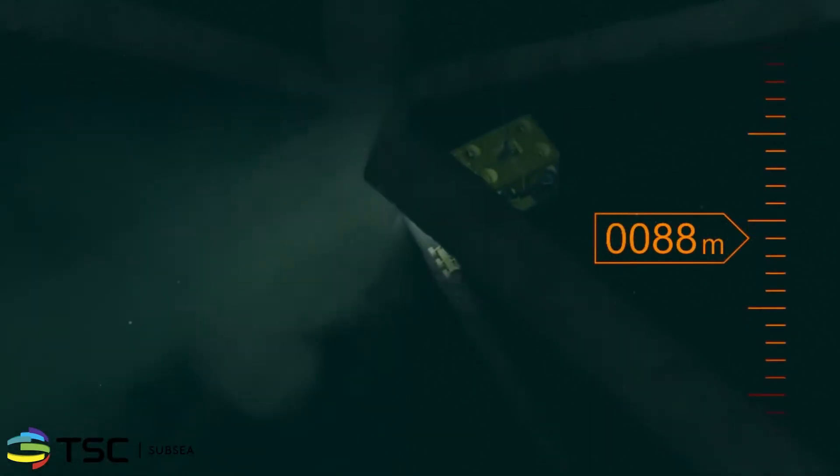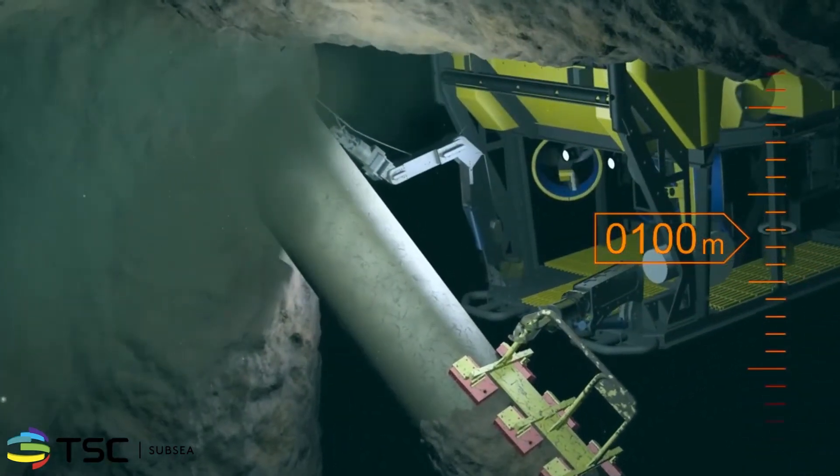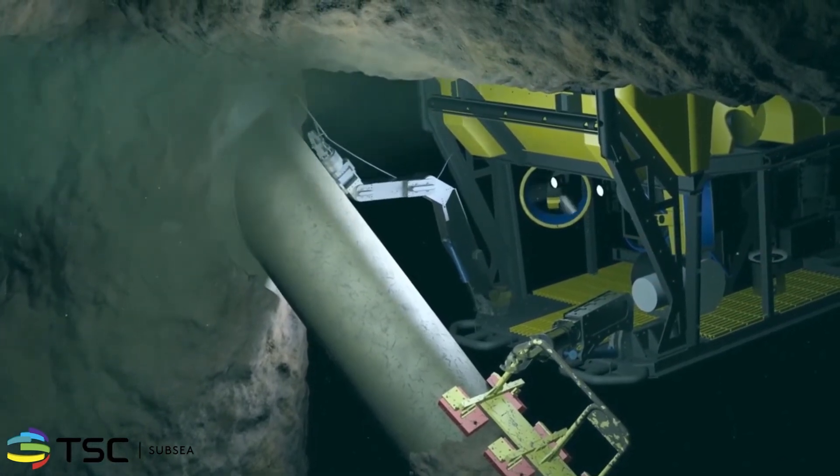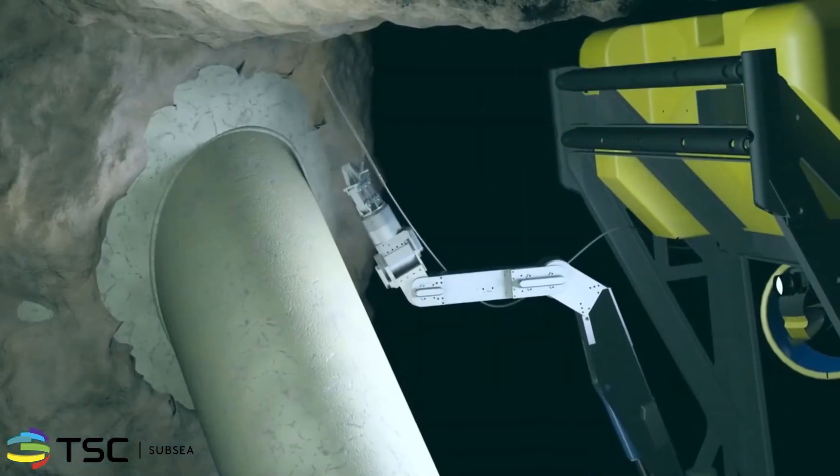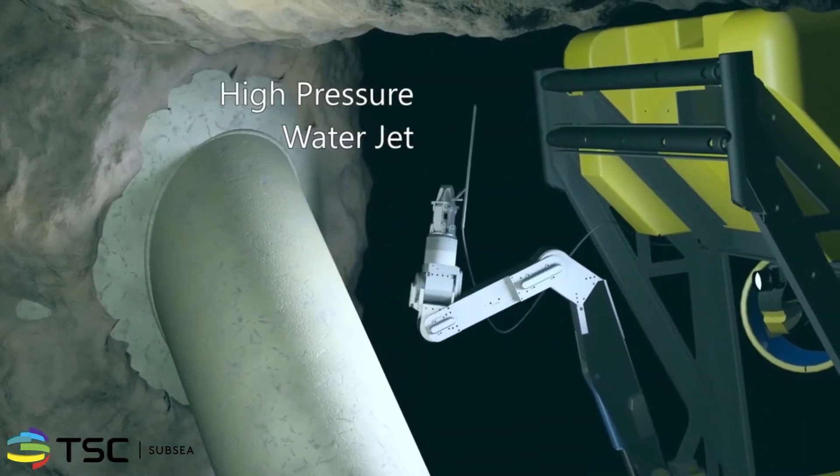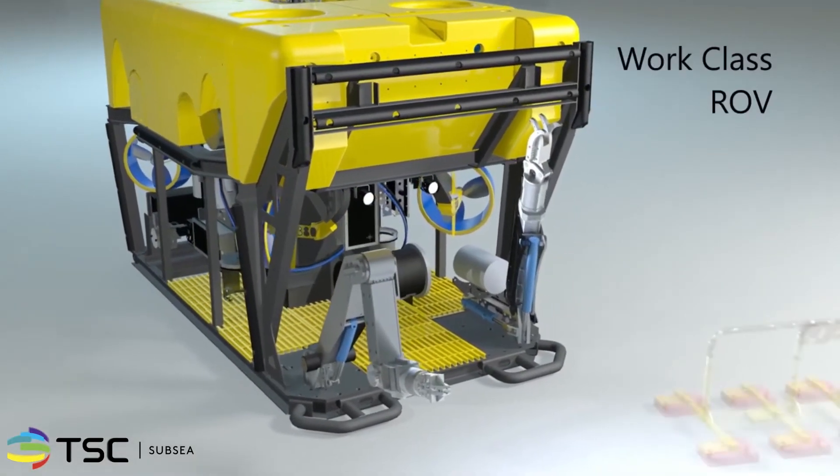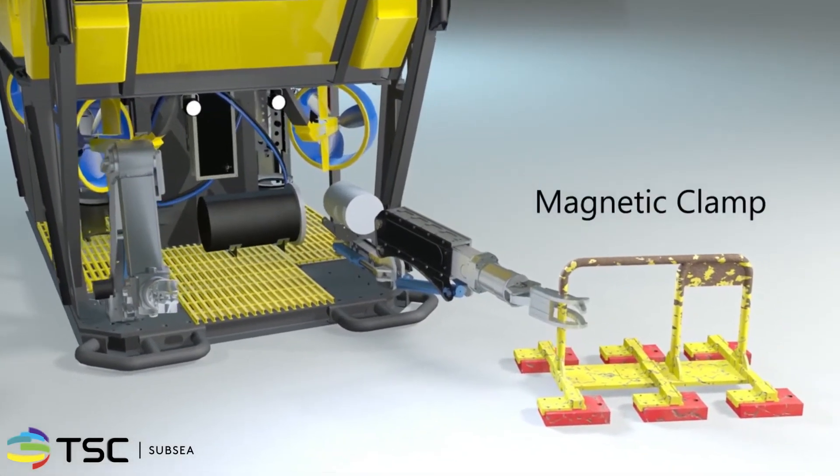In preparation for the inspection, the weld must be cleaned to SA2 standards and the surrounding areas to SA1. Cleaning to SA2.5 levels is not necessary because coatings and residual marine growth do not obstruct the ACFM scanning technique. A variety of cleaning techniques such as a high pressure water jet can be used to perform this task. The tooling for both the cleaning and inspection is delivered from an ROV platform, the stability of which is supported by magnetic clamps that attach to the structure.